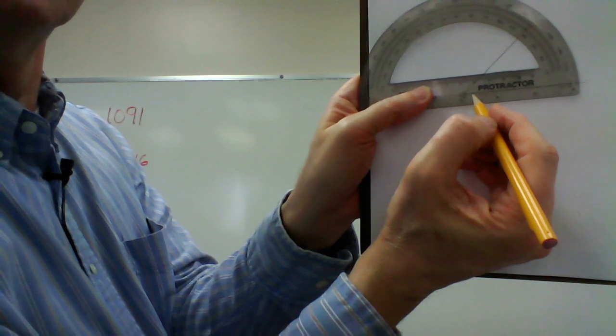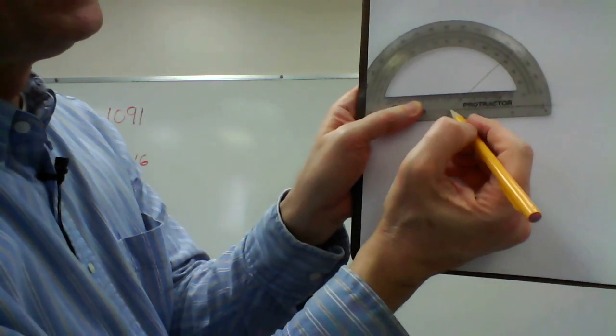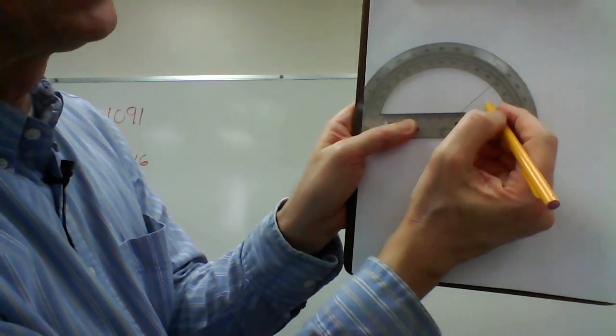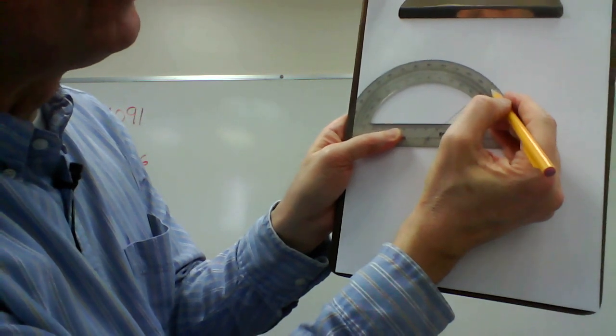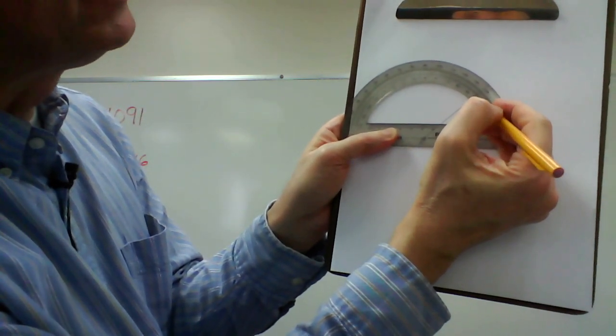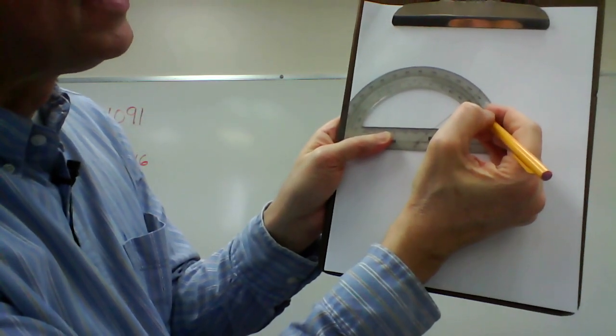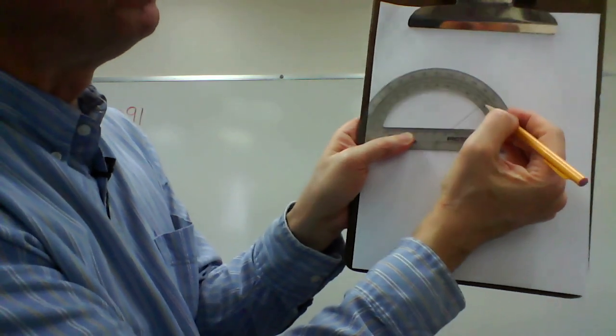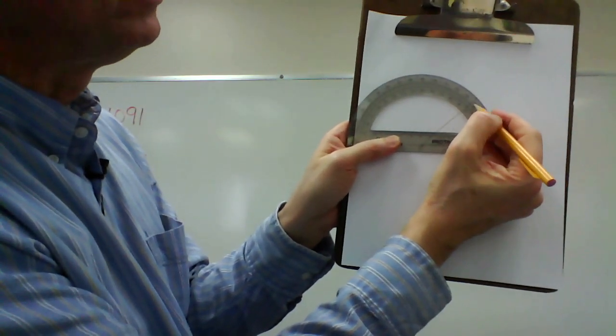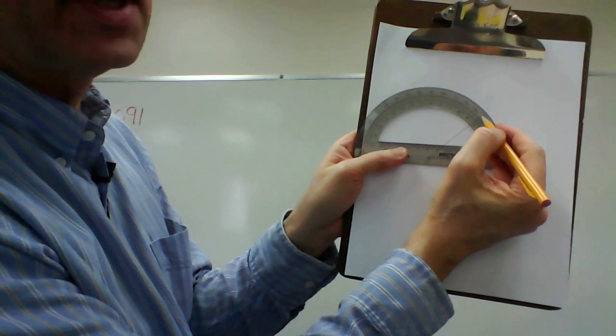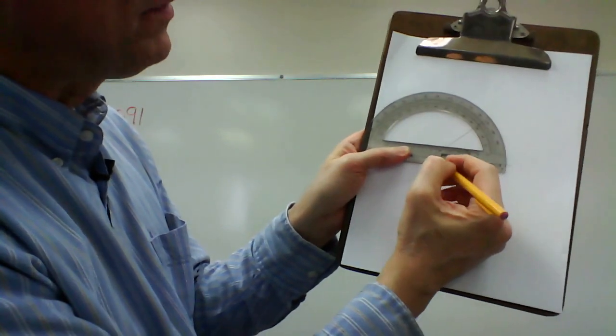All right, I don't know how clear that is, hopefully you can see that. Now to measure the angle, I come over here and there's two numbers: here's 140 and here's 40. So I need to figure out which one of these am I going to use and which way am I headed.